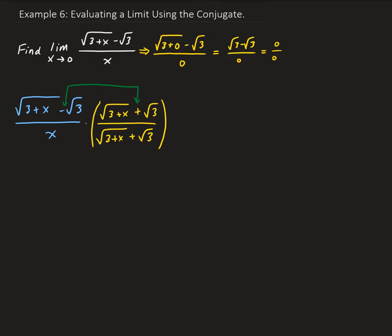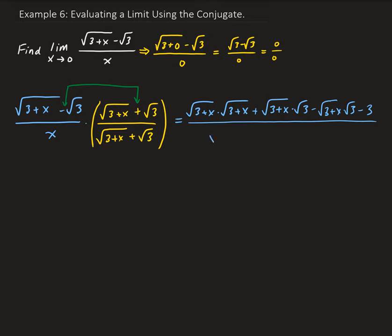What's going to happen is that the x terms will cancel out — we'll end up getting an x over x. Let's multiply this out. So we're going to get square root of 3 plus x times another square root of 3 plus x, minus square root of 3 plus x times square root of 3, and then square root of 3 just gives us 3. All divided by x times the square root of 3 plus x plus root 3.